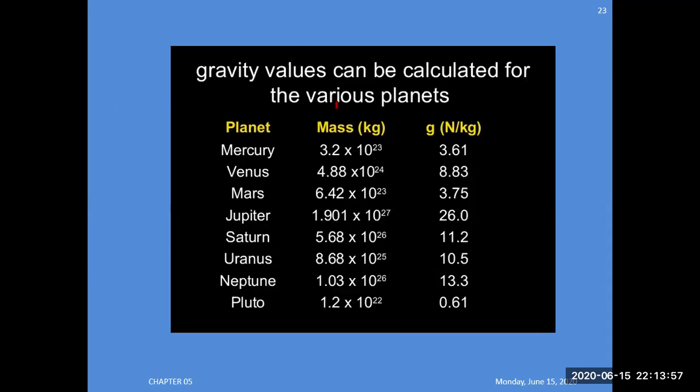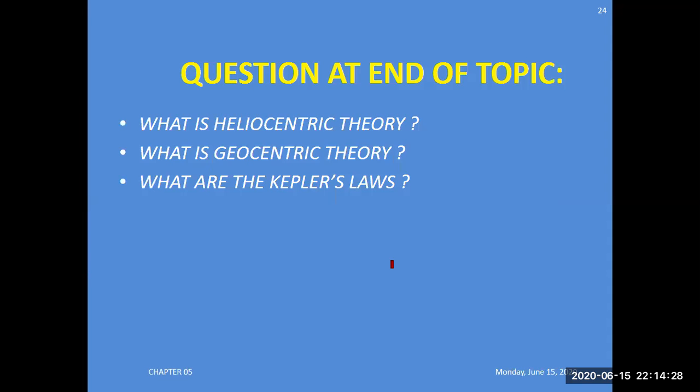The values of gravity can be calculated for different planets: Mercury, Venus, Earth, Mars, Jupiter, Saturn, Uranus, Neptune, and Pluto. These are the different types of planets, and values are given for each planet.